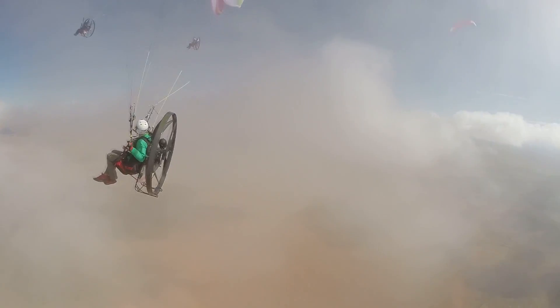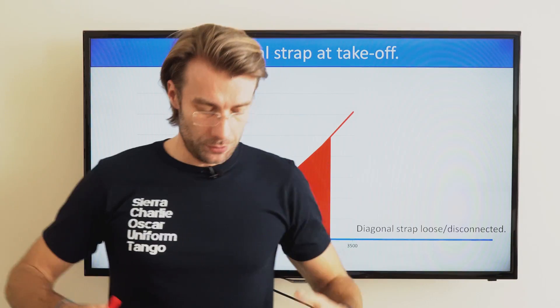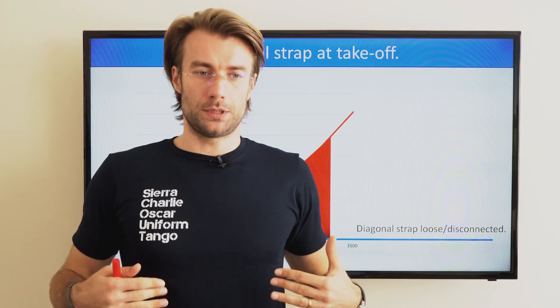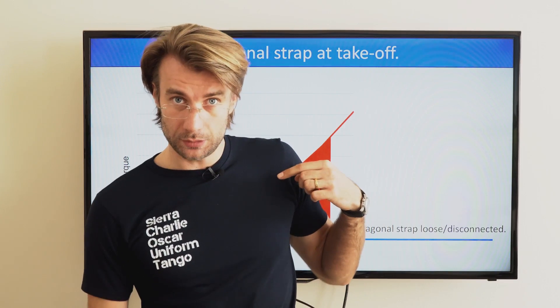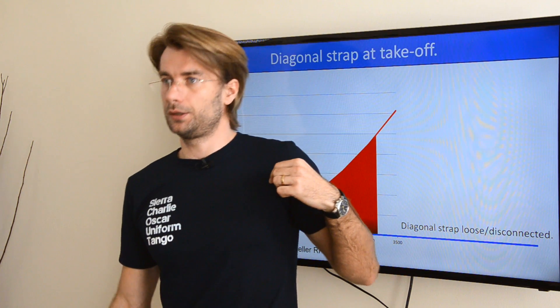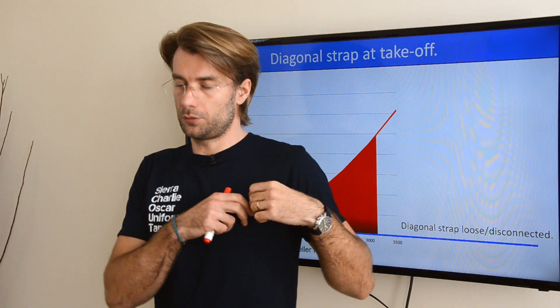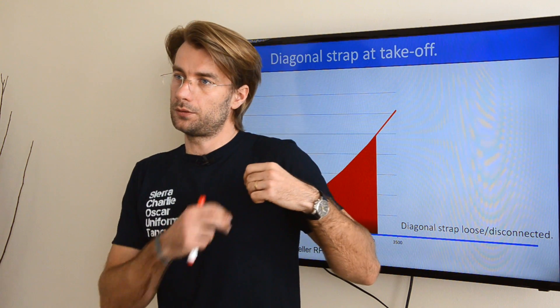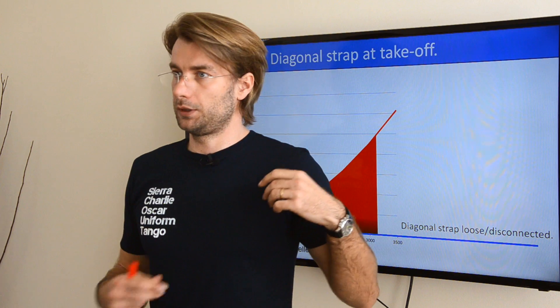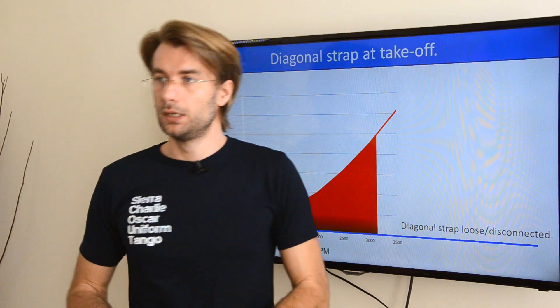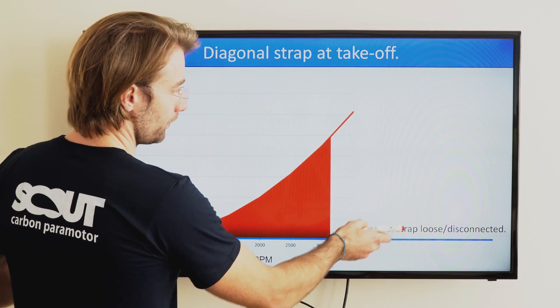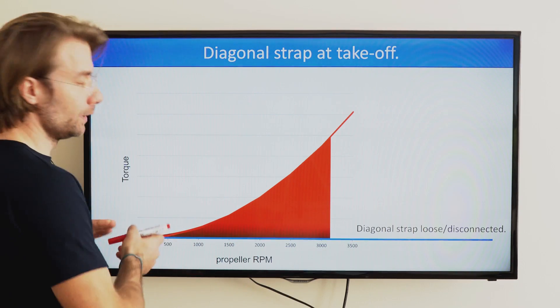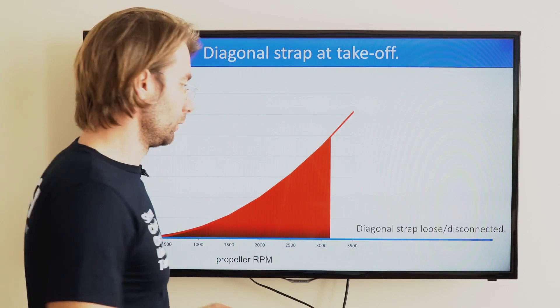So far so good, but things get a bit more complicated on takeoff. When you are standing upright for takeoff, the distance between the carabiner and your right knee is way longer than when you're sitting. This means you need to be able to run, you need to have this diagonal strap very loose or disconnected. So right after takeoff, your diagonal strap is either loose or disconnected, giving zero torque compensation.